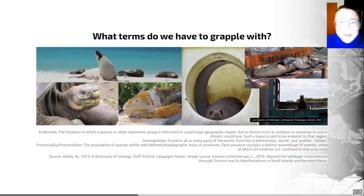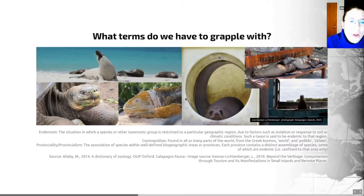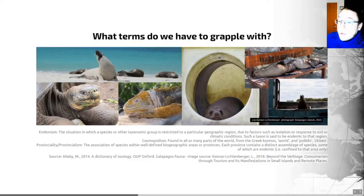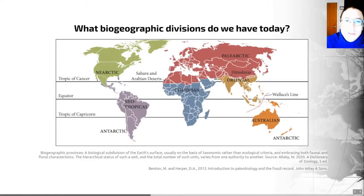Endemic species rarely occur in isolation — where they are found together, this is called provincialism, or provinciality. Provincialism is the association of species within well-defined biogeographic areas or provinces, where each province contains a distinctive assemblage of species, some of which are endemic. This is a step up from a single species — it's the collection of species found within a particular area.